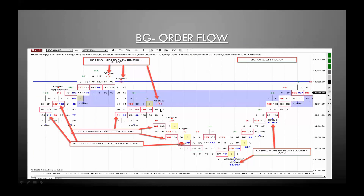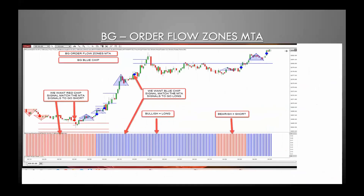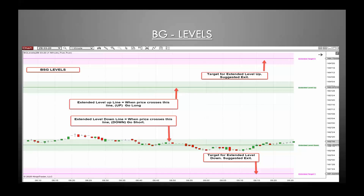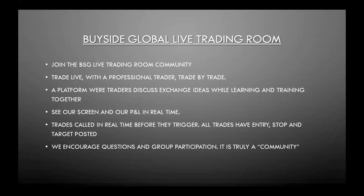Supply and demand indicators: when you get a green arrow, go long; when you get a red arrow, go short. BG levels — price crosses above the level, take a long, wait for it to hit its exit target, take your profits. It goes below, go short, go to the target, take your profits. Tying this all together — we have the trading room where you can join our trading room community, trade live with professionals, trade by trade. We'll show you our screens in real time, P&L, and you can learn and train together. You're going to see the trades called in real time before they trigger, with entries, stops, and targets posted.